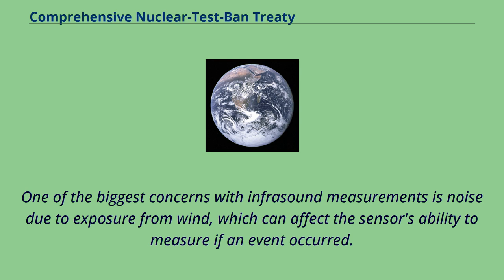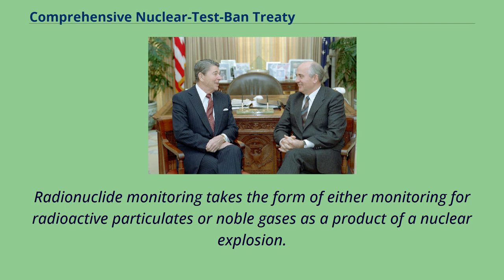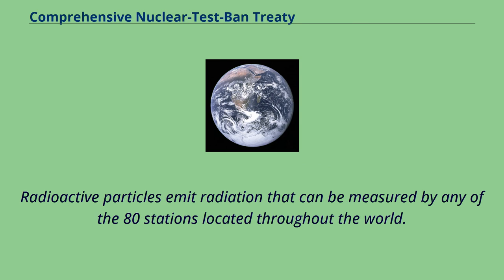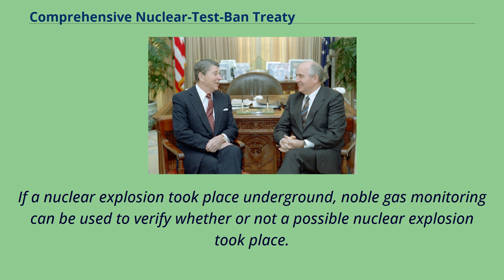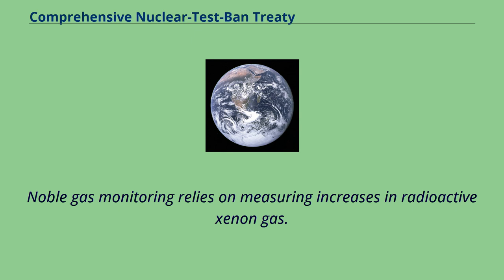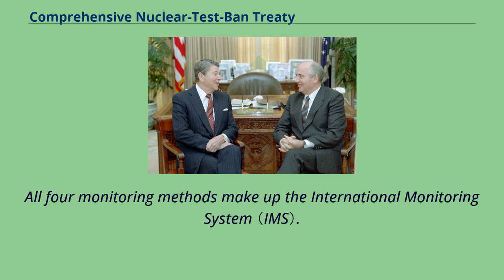One of the biggest concerns with infrasound measurements is noise due to exposure from wind, which can affect the sensor's ability to measure if an event occurred. Together, these technologies are used to monitor the ground, water, and atmosphere for any sign of a nuclear explosion. Radionuclide monitoring takes the form of either monitoring for radioactive particulates or noble gases as a product of a nuclear explosion. Radioactive particles emit radiation that can be measured by any of the 80 stations located throughout the world. If a nuclear explosion took place underground, noble gas monitoring can be used to verify whether or not a possible nuclear explosion took place, relying on measuring increases in radioactive xenon gas. Different isotopes of xenon include 131MZ, 133Z, 133MZ, and 135Z.